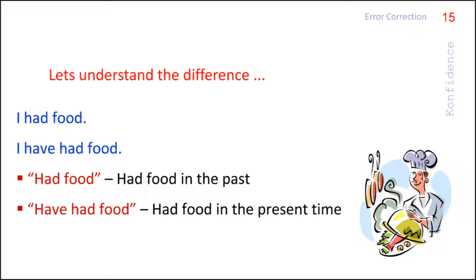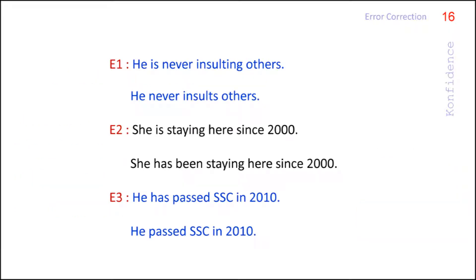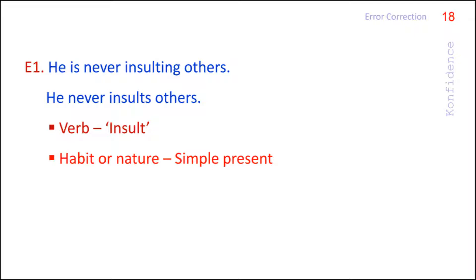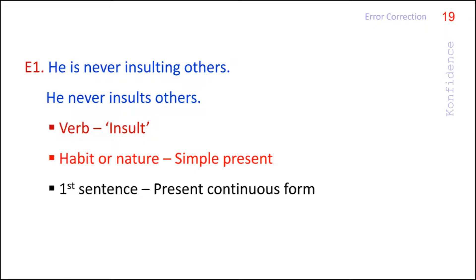Now let us see some more examples of errors caused by wrong tenses. In the first example, the verb or action word is 'insult.' This word shows the habit or nature of the subject 'he.' Habit or nature should be expressed with a simple present form of the verb. The first sentence is in present continuous form. Hence, the second sentence is the correct one.